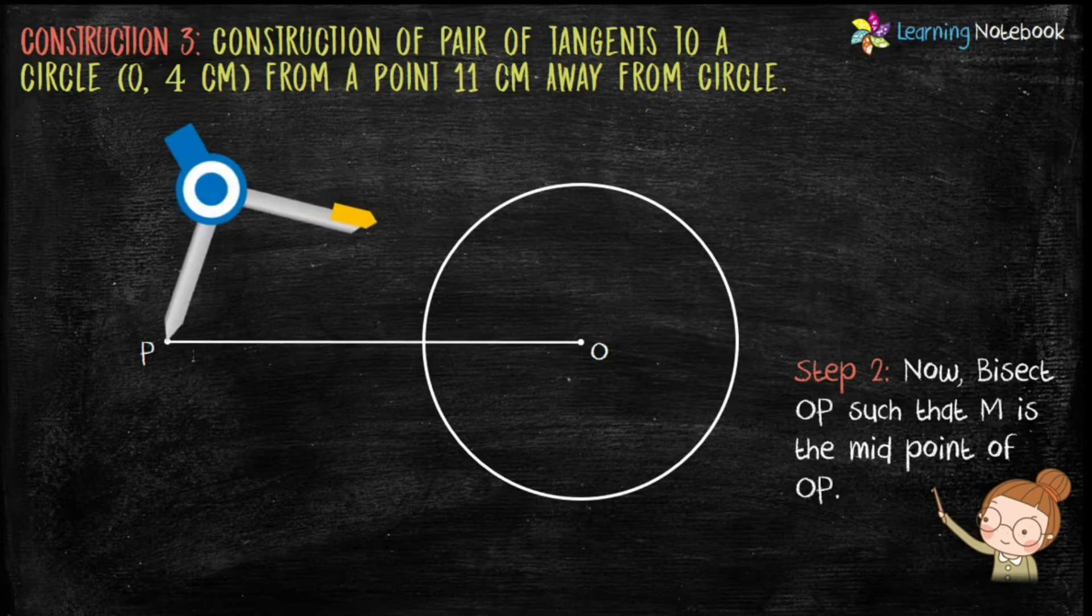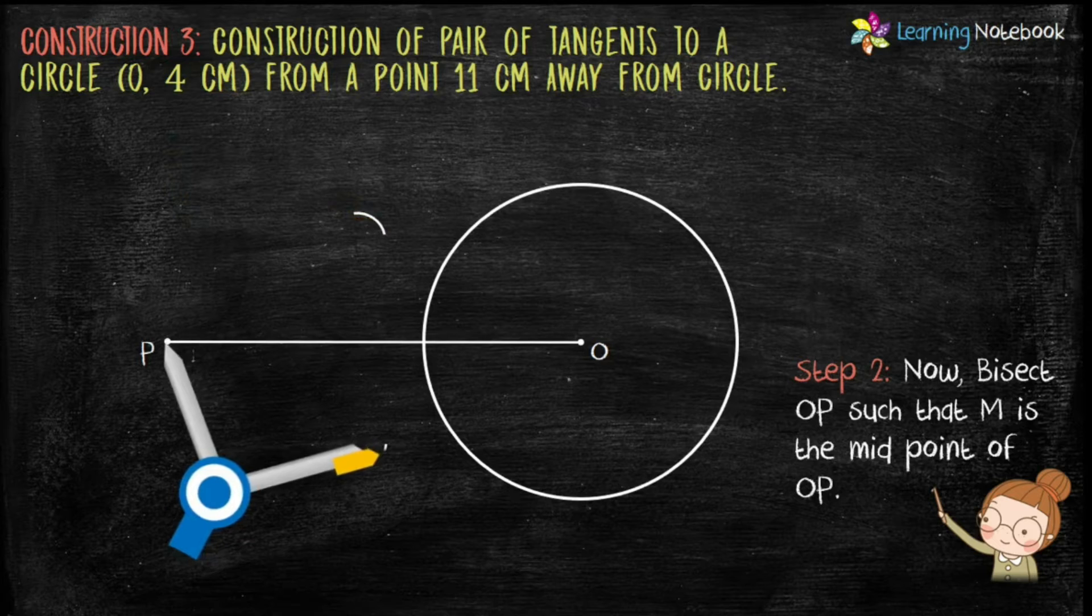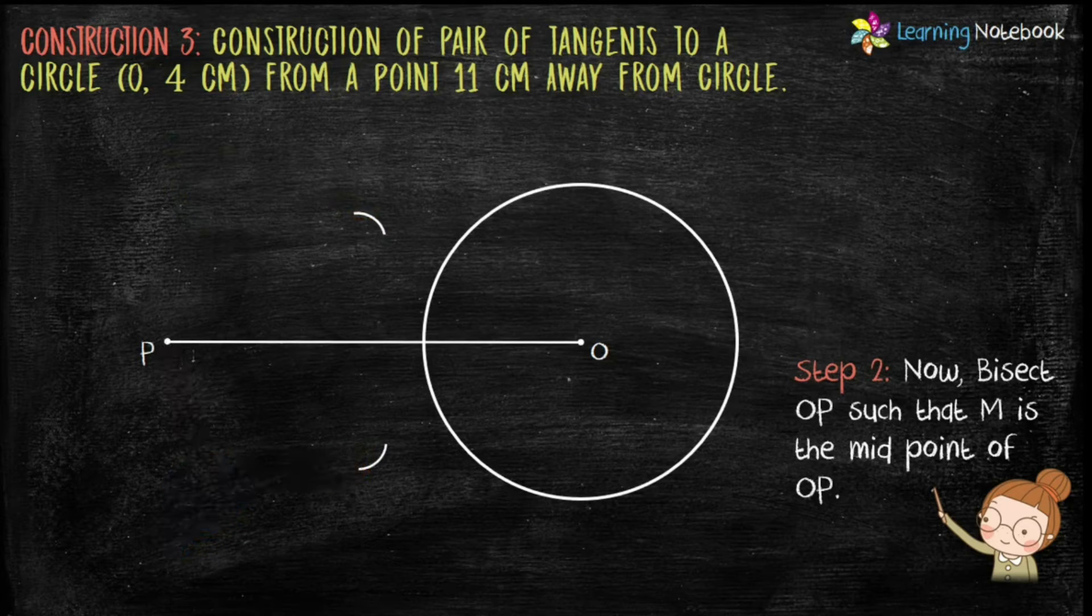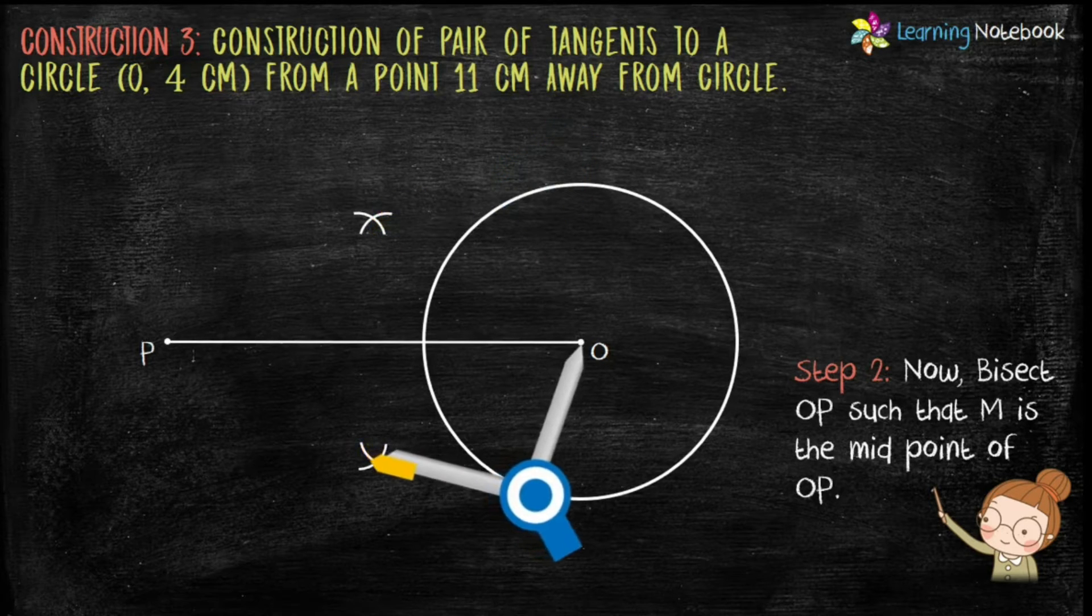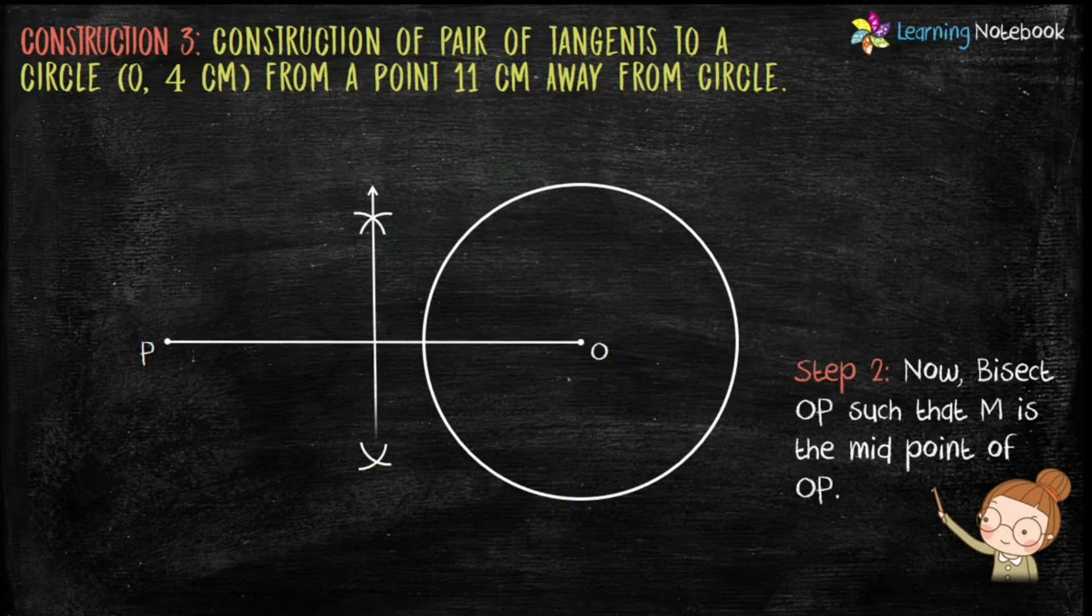Now place your compass on point P and mark the arcs on both sides as shown here. Now place the compass on point O and cut the arcs on both sides. Now join these two points. So this line will cut OP at a point M. Students, M is the midpoint of OP.